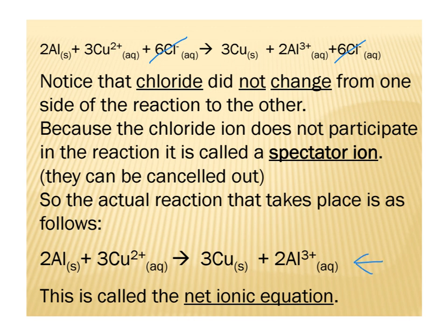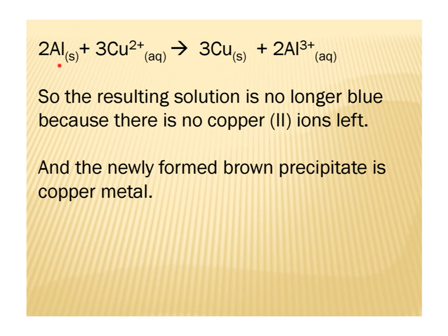After cancelling the spectator ions, we're left with what is called our net ionic equation. From our total ionic equation, the aluminum remains, and we have three copper ions on the reactant side. On the product side, we have three copper solid and two aluminum ions. So we've cancelled the spectator ions, leaving us with the net ionic equation: two aluminum plus three copper(2+) ions yields three copper solid and two aluminum ions.